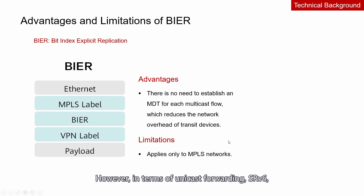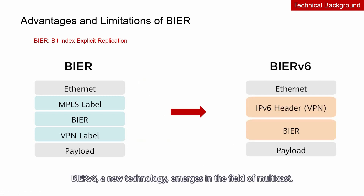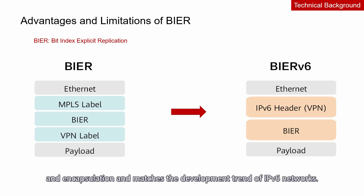However, in terms of unicast forwarding, SRv6, which is based on the IPv6 data plane, has developed rapidly. To cooperate with this technology trend, BIERv6, a new technology, emerges in the field of multicast. Independent of MPLS, BIERv6 uses the BIER architecture and encapsulation and matches the development trend of IPv6 networks.